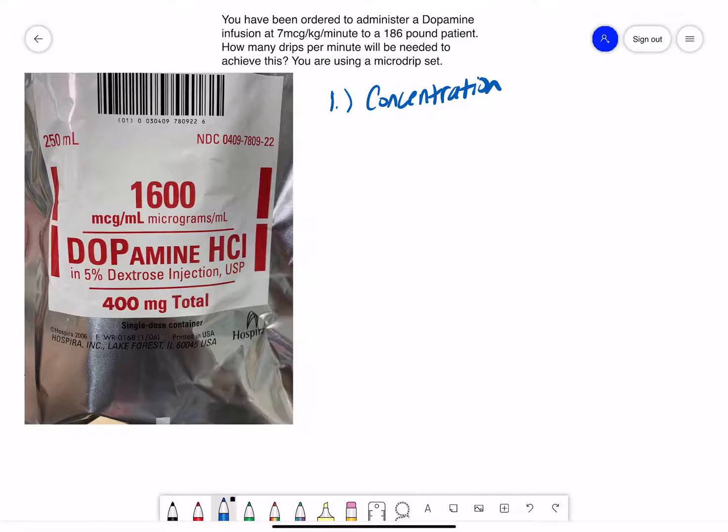So step number one is what is the concentration of the dopamine? Now, I have a picture with this that tells us what the concentration is. But in your program or on the national registry, you're much more likely to just be given the information in the question that reads something like your dopamine is supplied as 400 milligrams in 250 milliliters or 800 milligrams in 500 milliliters.